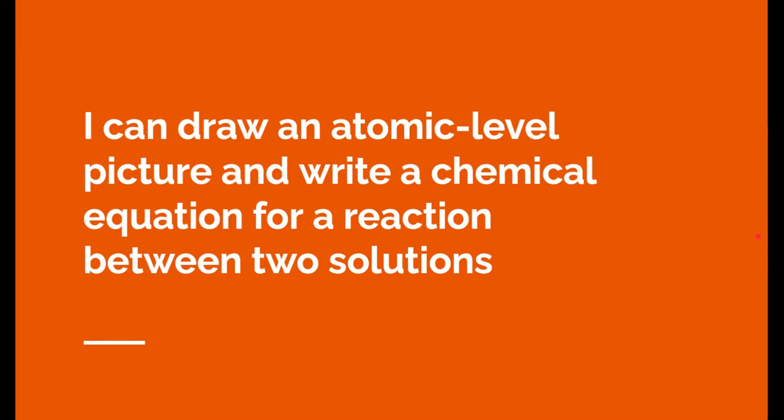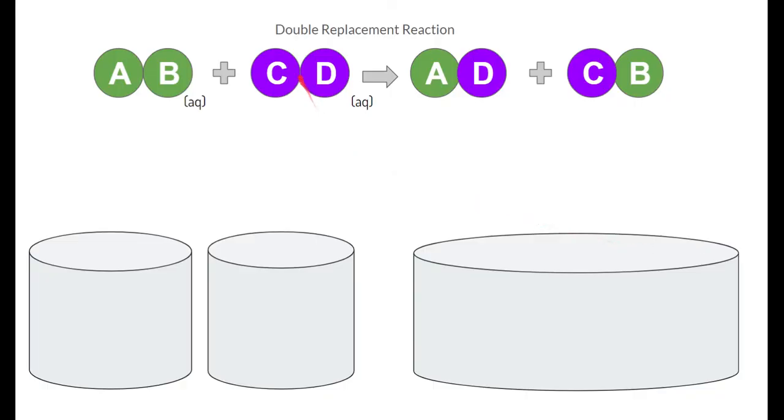All right. I can draw an atomic level picture and write a chemical equation for a reaction between two solutions. So we're going to take what we just learned, and we're going to add on to it. So here what we have is a double replacement reaction. It's a very simple reaction where we have two substances. Here's our first substance, this green substance. It's AB. This is a compound just like sodium chloride, but it's dissolved in water. That's what makes it aqueous.